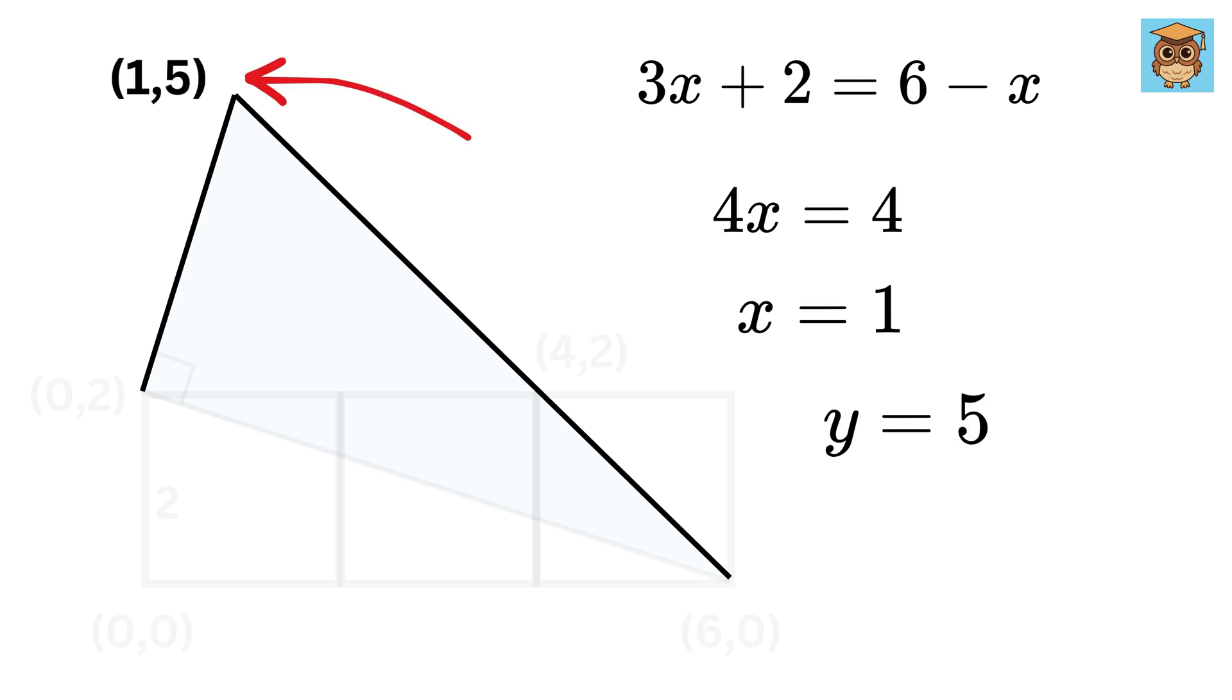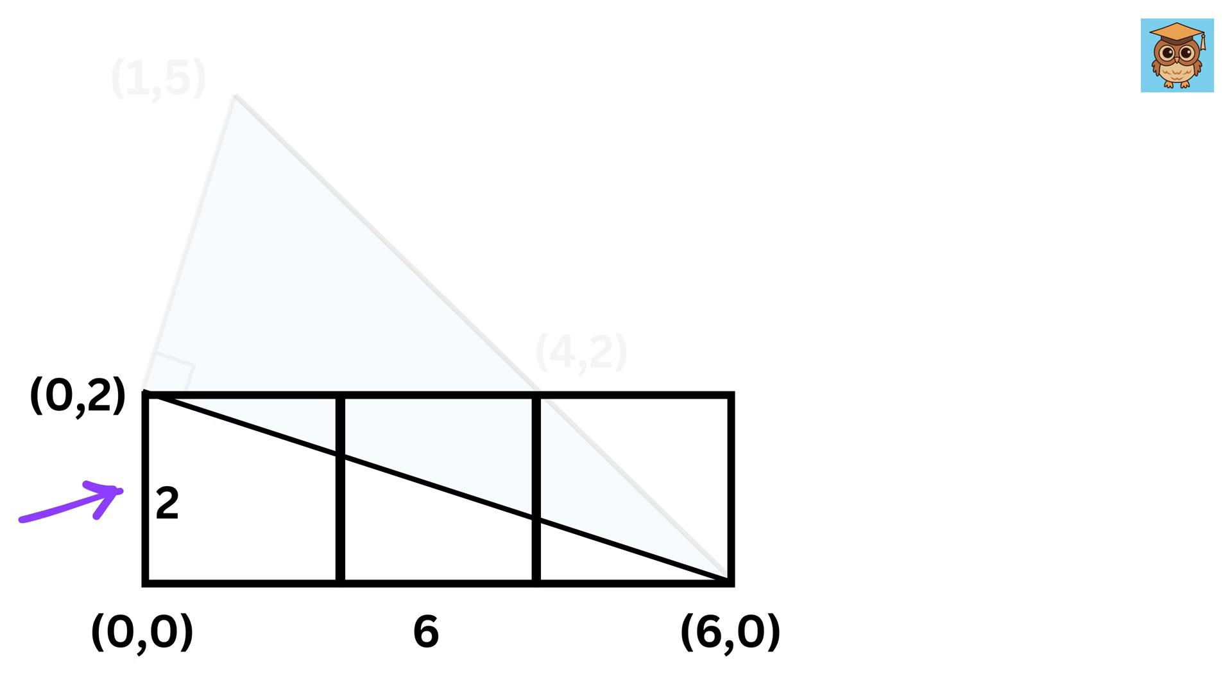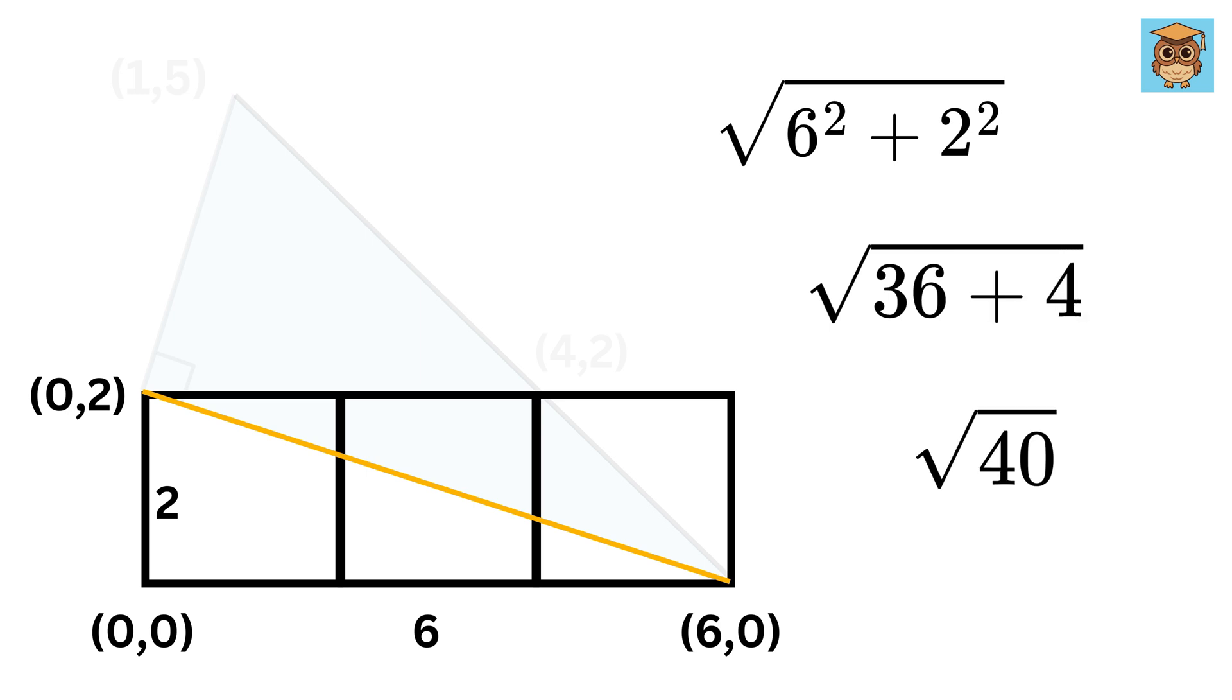So using this we get y equals six minus one, or five. Thus this point will be one comma five. Now this is six and this is two, so this hypotenuse will be the root of six square plus two square, or it will be root of 36 plus four, or root 40.